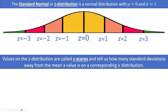Values on the Z distribution are what we call Z scores, and they tell us how many standard deviations away from the mean a value is on a corresponding X distribution. Typically you will not be thinking about a Z distribution in isolation — there aren't very many variables that have a mean of 0 and a standard deviation of 1. Typically you'll be thinking about the Z distribution as it relates to a corresponding X distribution.